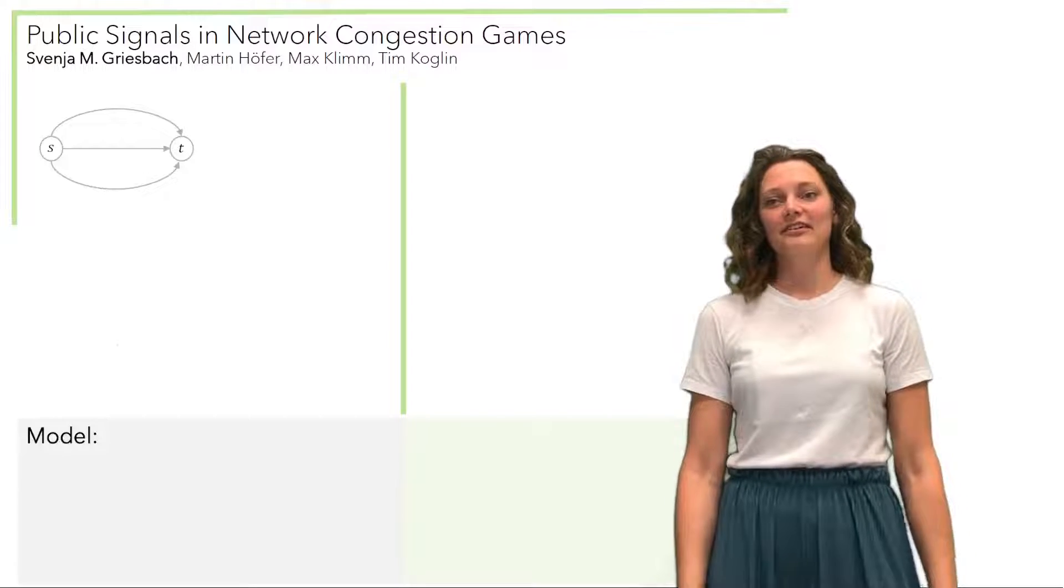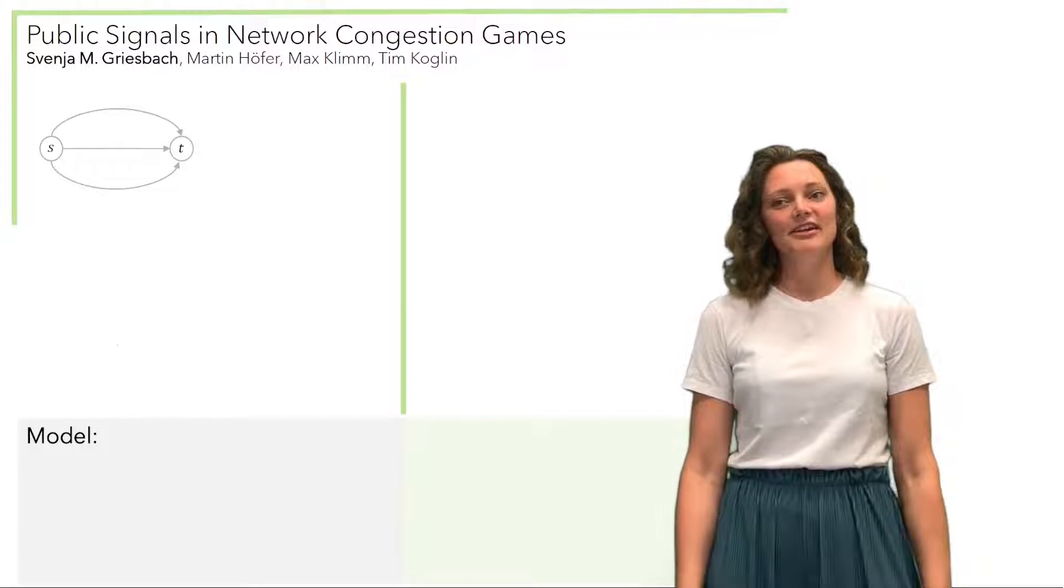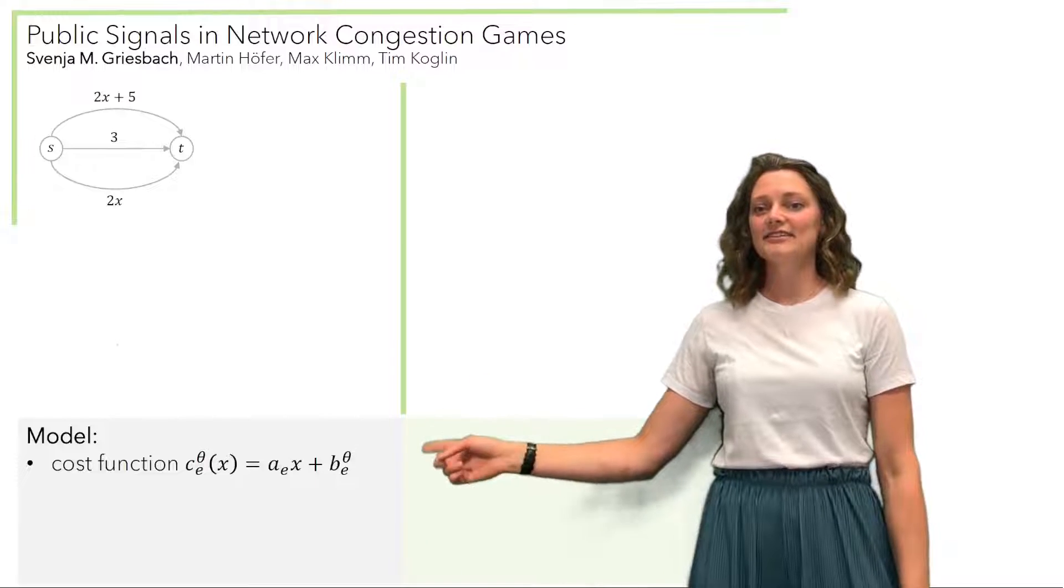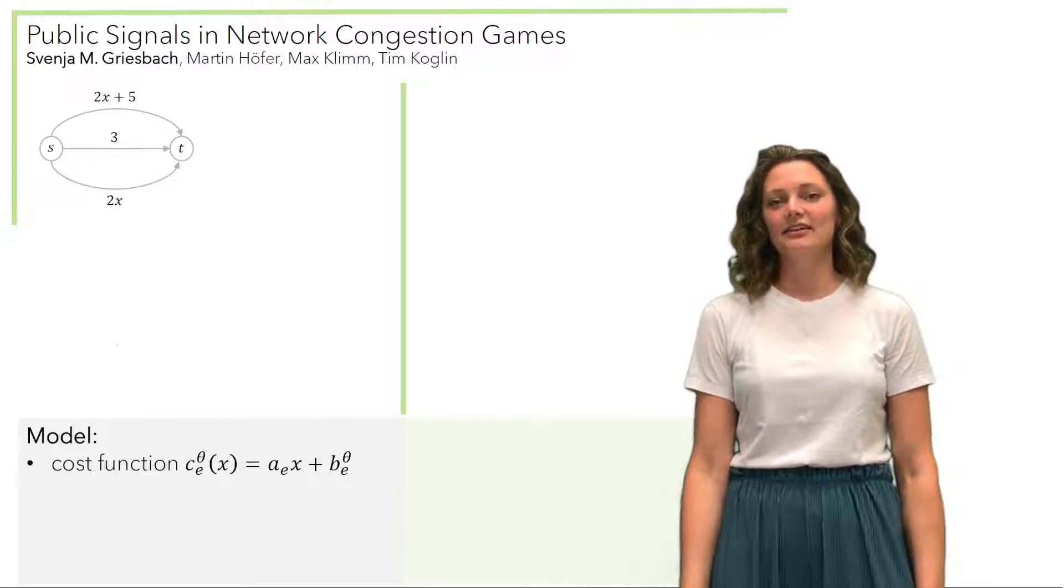So in our model, we are given a directed ST graph, and each edge has affine costs as given down here. And as you can see, the offset actually depends on a given state.